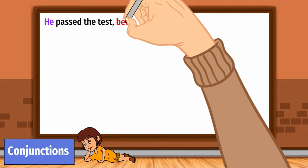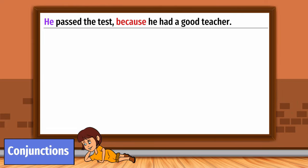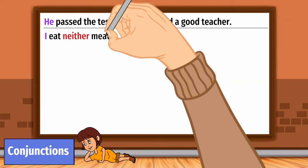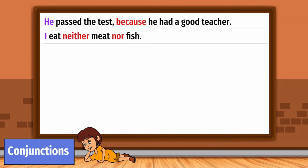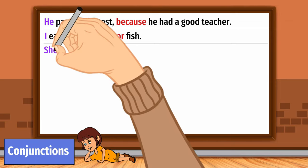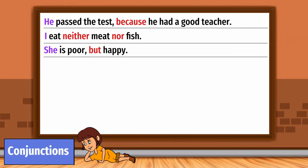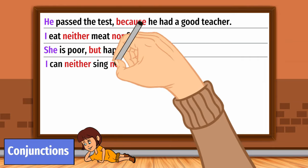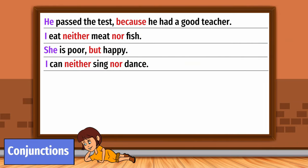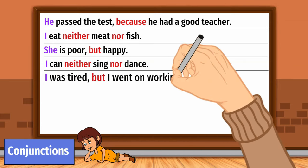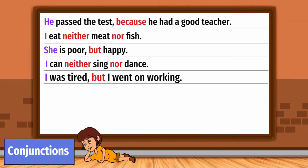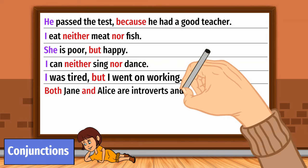He passed the test because he had a good teacher. I eat neither meat nor fish. She is poor but happy. I can neither sing nor dance. I was tired but I went on working. Both Jane and Alice are introverts and get along very well.